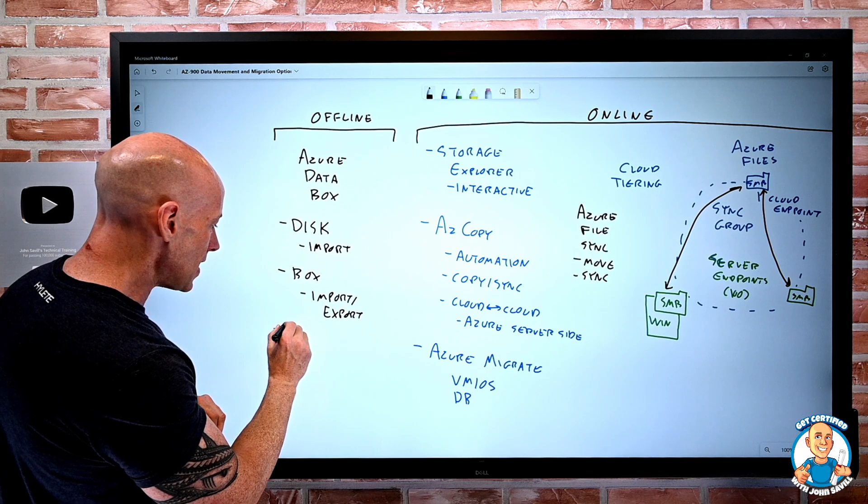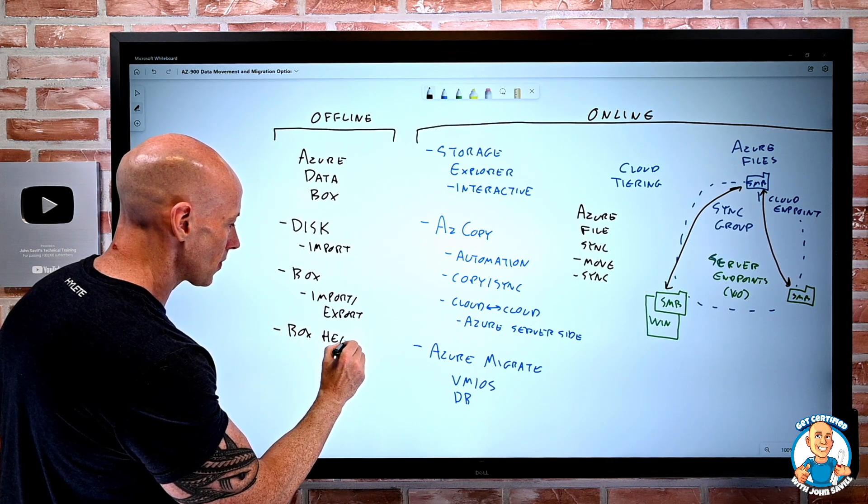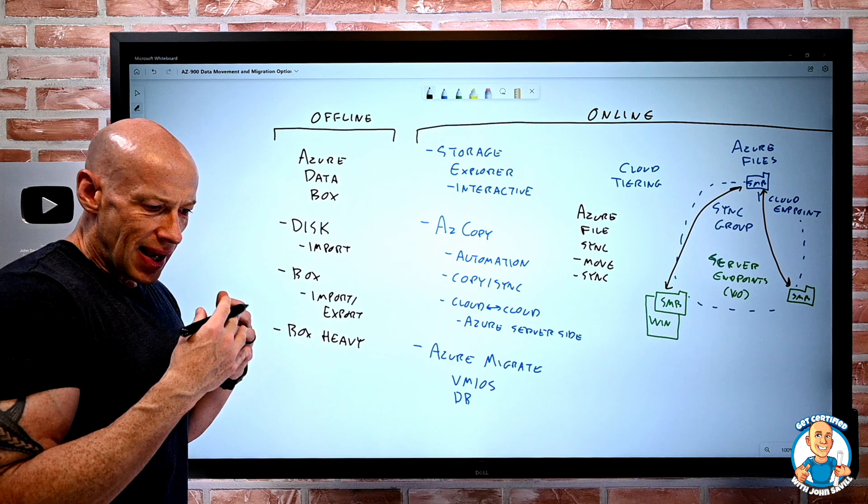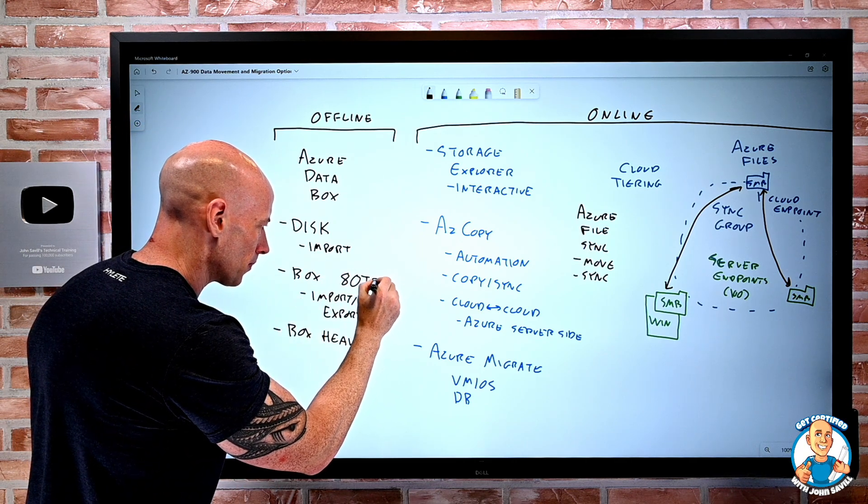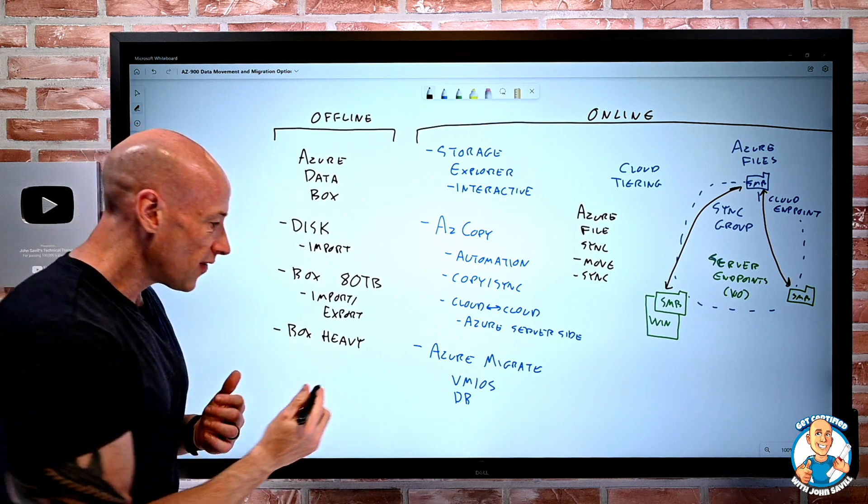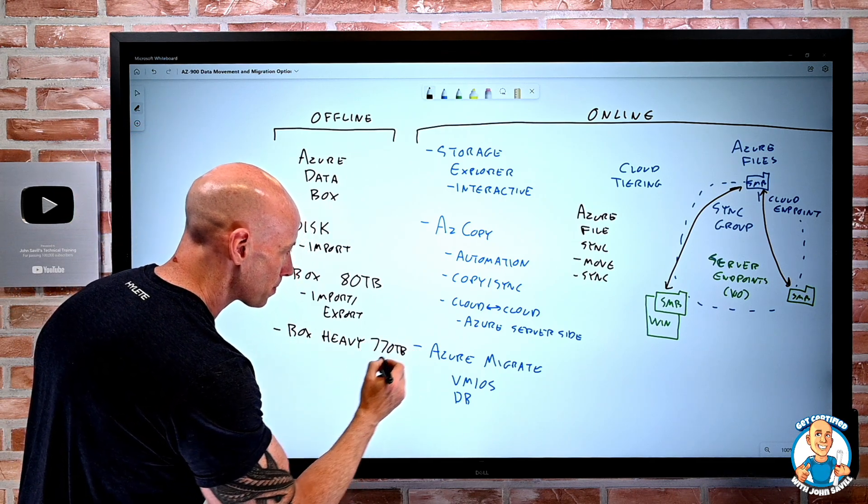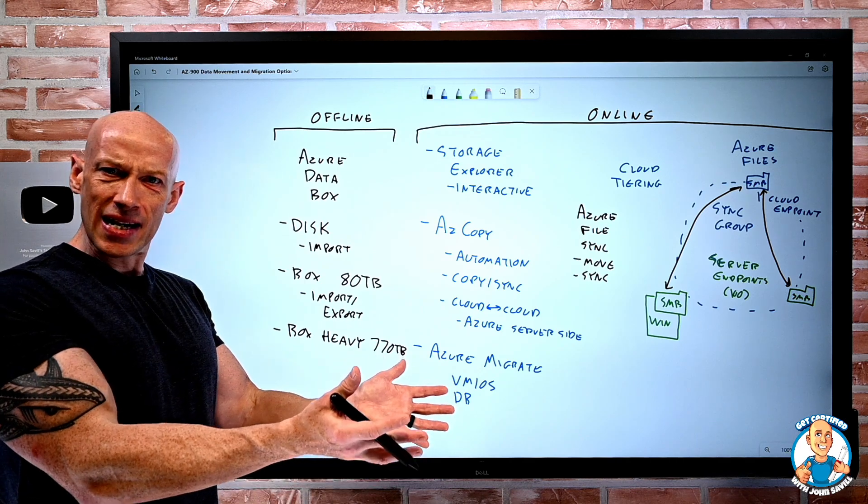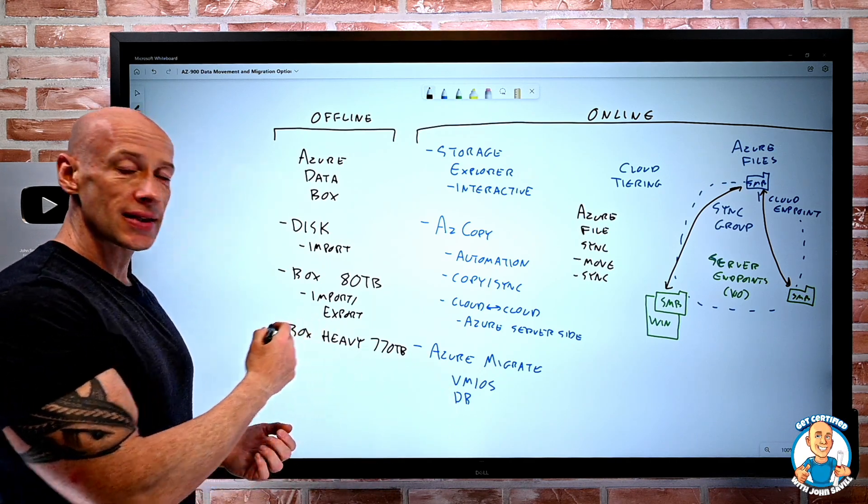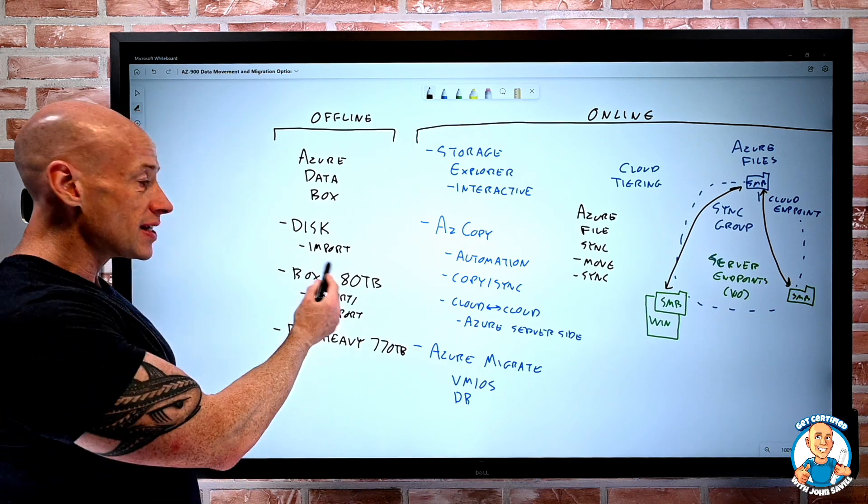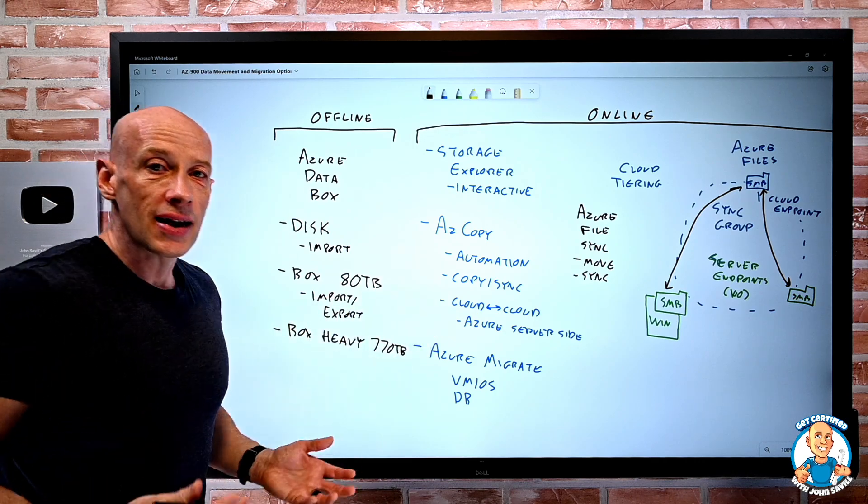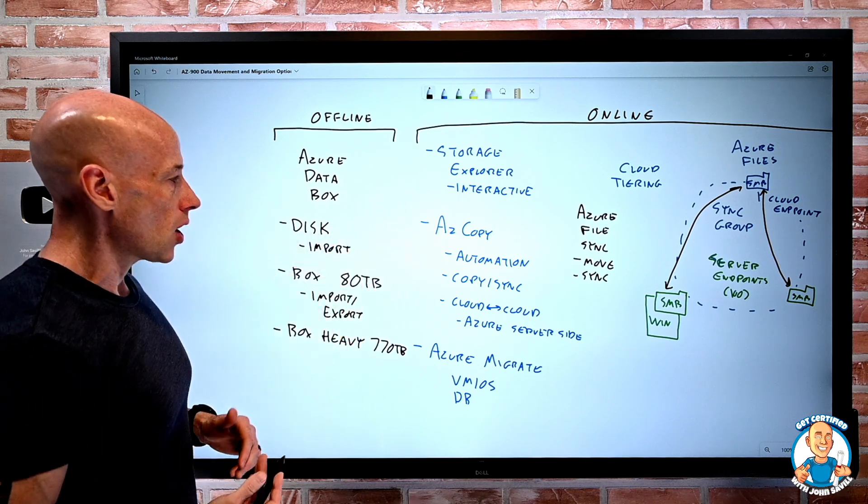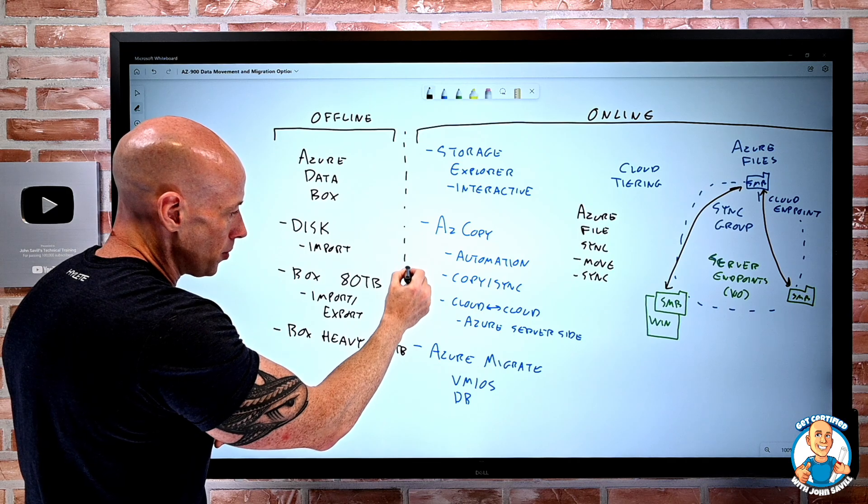And then there is a Data Box Heavy. The Data Box was 80 terabytes and 50 pounds. Well, the Data Box Heavy is 770 terabytes, but it's 500 pounds. This ships via freight. It's this massive thing that will get rolled into your data center. But if I do have just a huge amount of data to move offline, I do that. It works exactly the same way. I'll see shares and storage account. I copy to it. And then it ships back via freight. And they bring it into my storage accounts. But obviously, because it's shipping freight, there's longer times there. So we really have these different options for data movement.